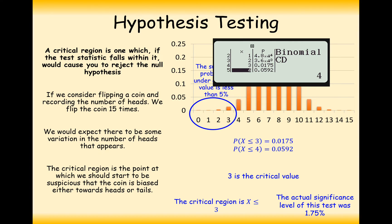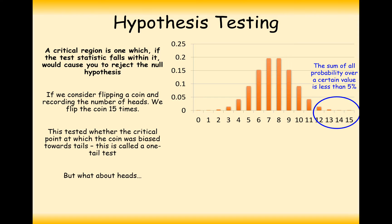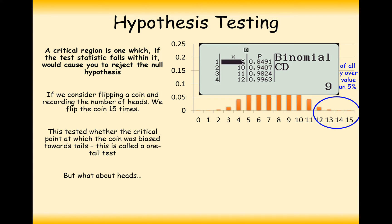We don't just test the lower end — we could potentially be testing the upper end of the scale as well. We could be testing the sum of all the probabilities over a certain value is less than 5%. For example, I would be suspicious if out of 15 flips I got 12 or more heads. Is 12 the critical value, or is 11? The only way to find out is to use your calculator in binomial CD mode. Because we're working at the top end, we're looking for the probability up to a certain point to be 95%, then taking the rest of those values upwards.